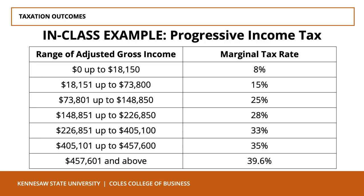What is the average tax rate for the same individual earning $100,000 a year? We take the total tax calculated — $16,349.50 — divide it by the person's income of $100,000, and multiply by 100 to express it as a percentage. In this case, the person is paying an average tax rate of 16.35%.